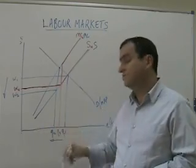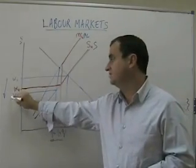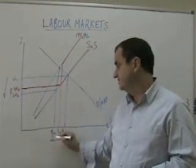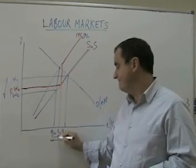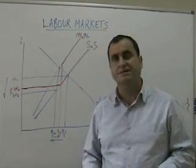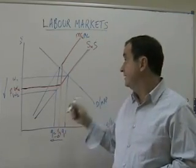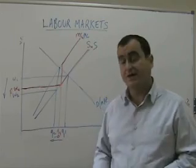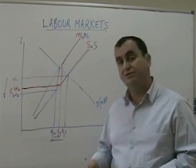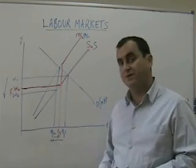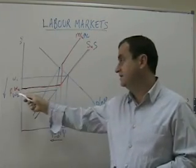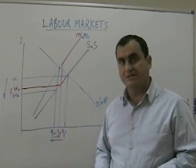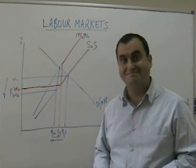Hence, OQ3 will now be employed at a higher wage rate WU. So the presence of a trade union in a market where there is a monopsonist buyer can actually improve employment prospects for workers and raise the wage rate.